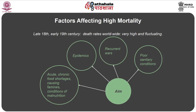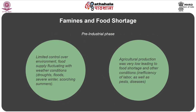The main reasons for such high mortality rates were acute and chronic food shortages causing famines and conditions of malnutrition, epidemics, recurrent wars, and poor sanitary conditions. In the pre-industrial phase, man had limited control over his environment, and food supply was profoundly affected by changes in weather conditions such as droughts, floods, severe winters, and scorching summers. Agricultural development and production was very low, leading to food shortages, inefficiency of labour, pests, and diseases.